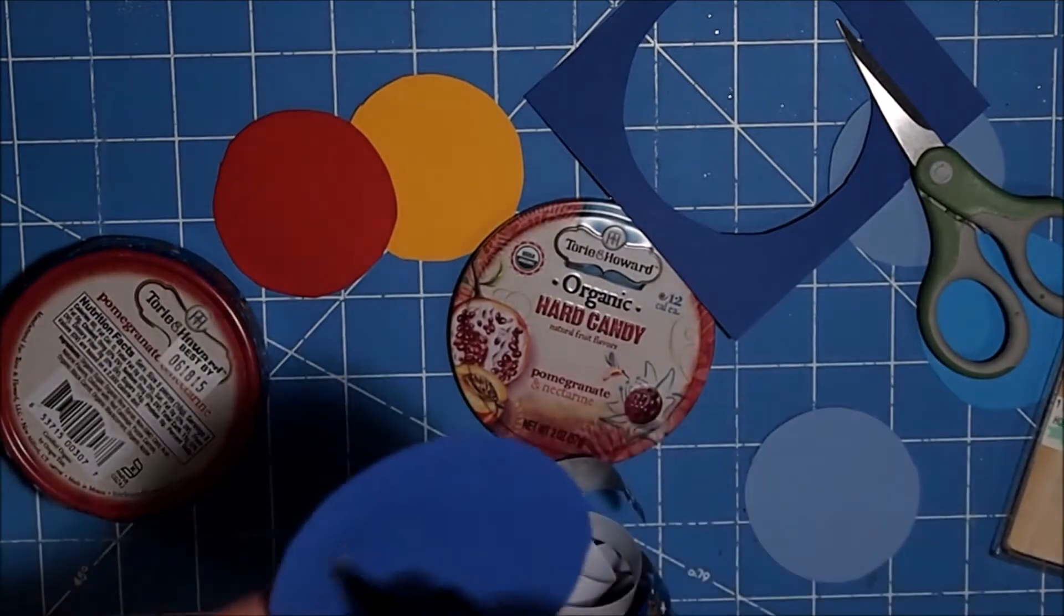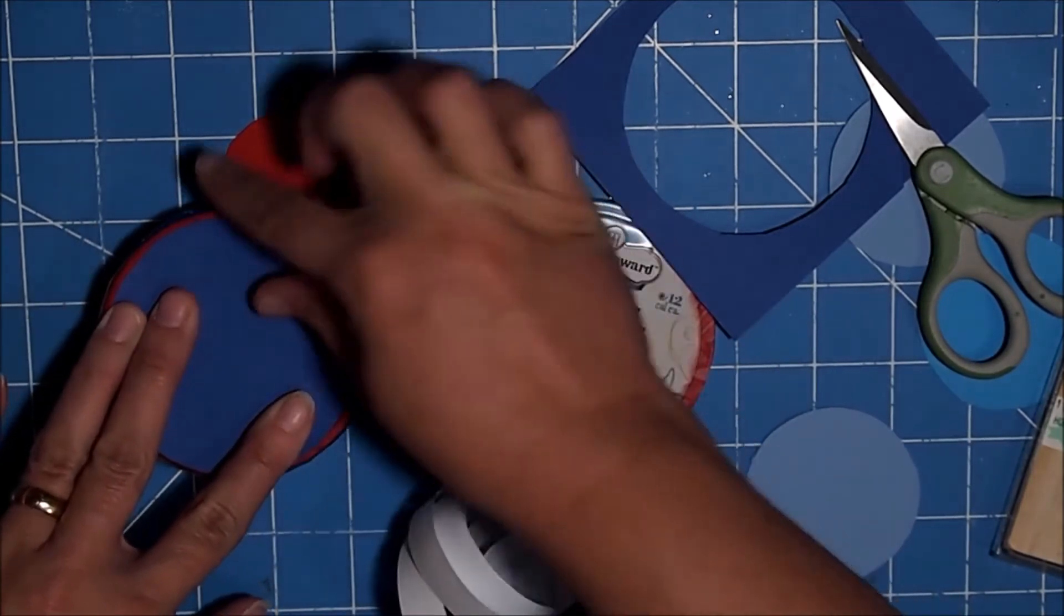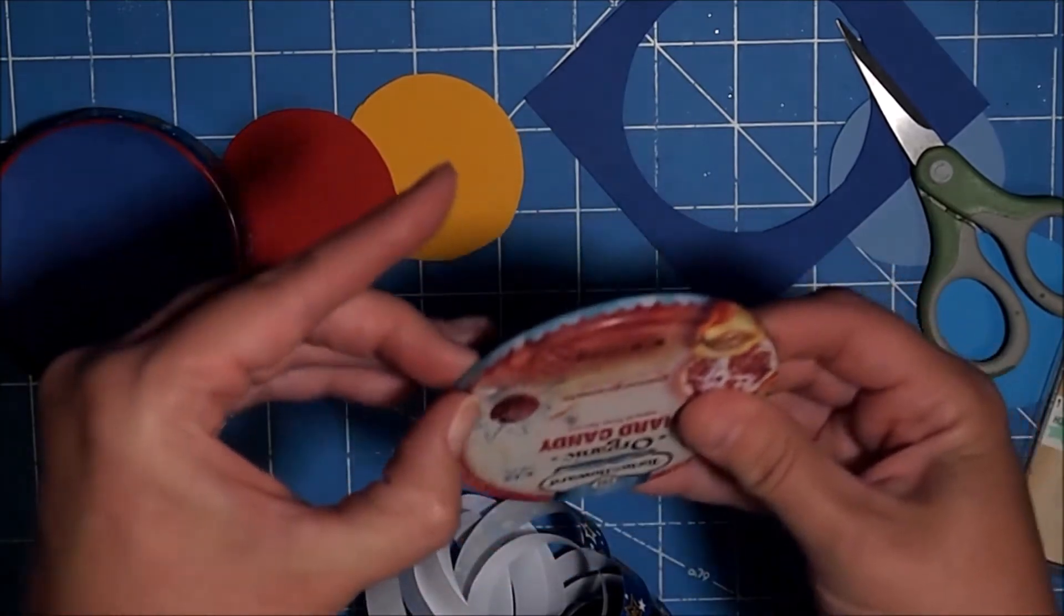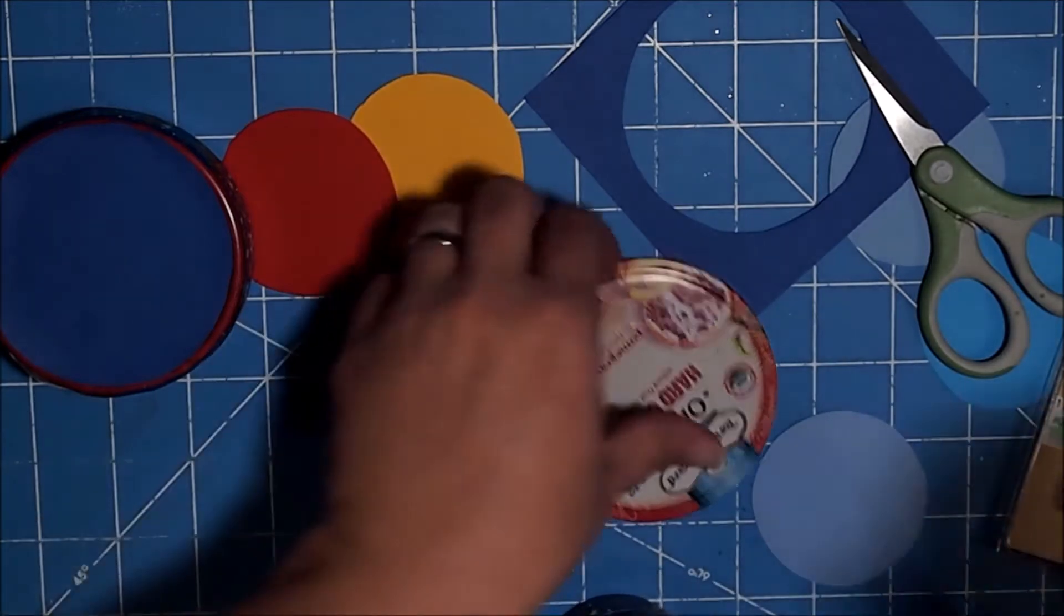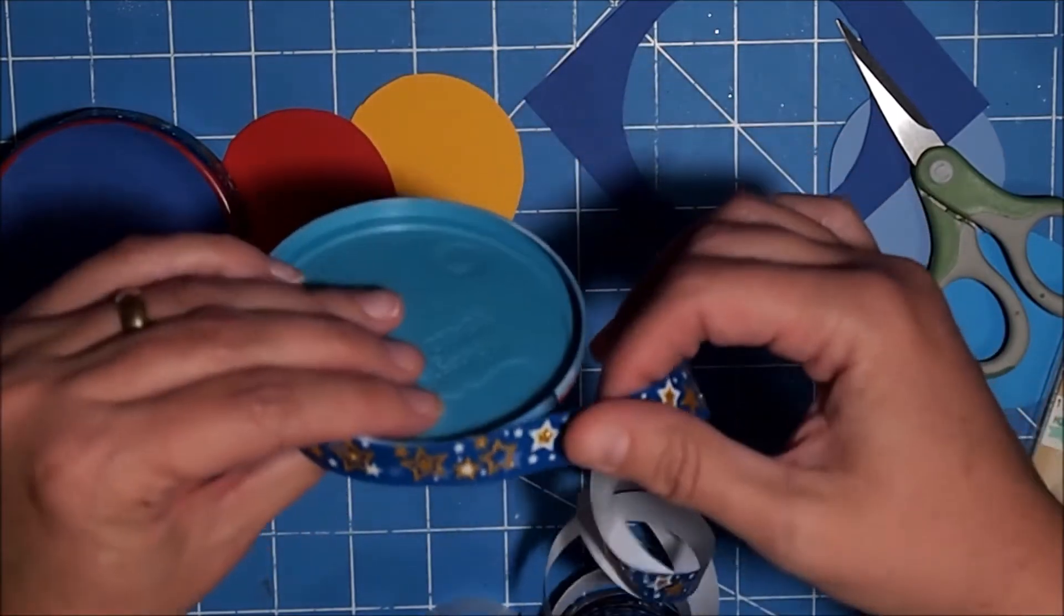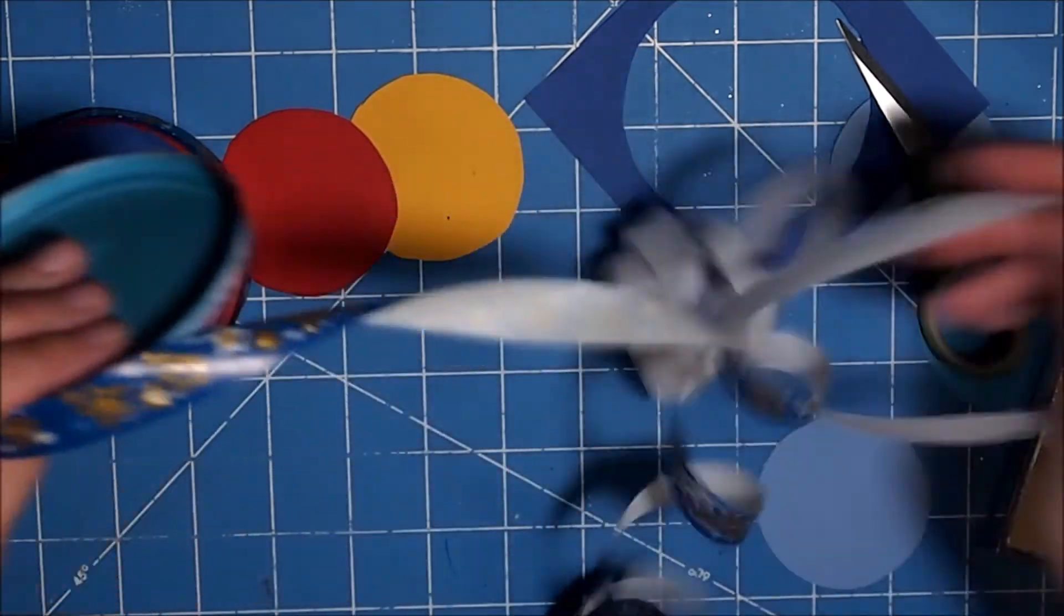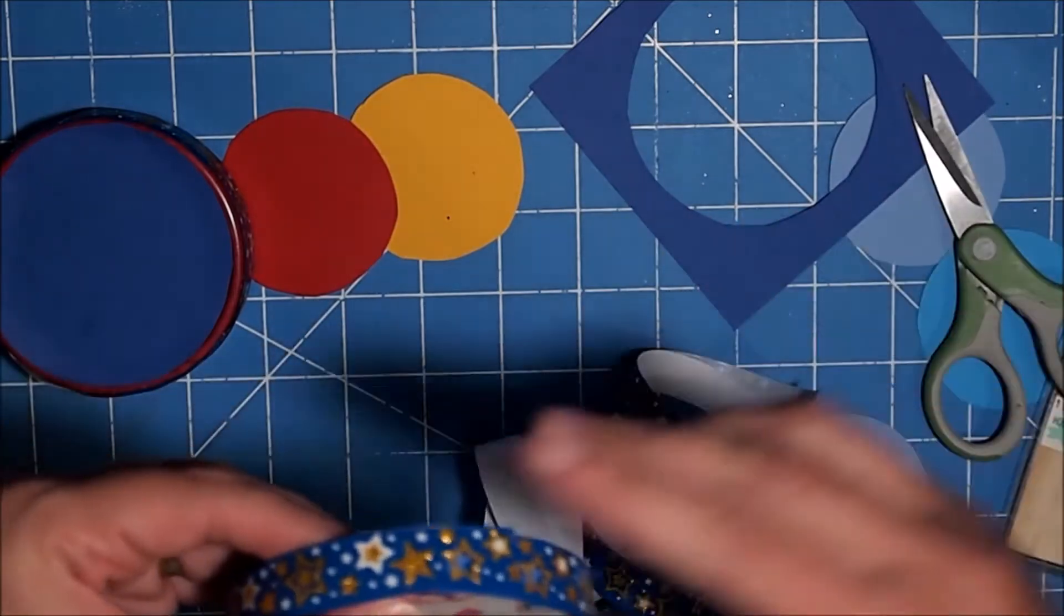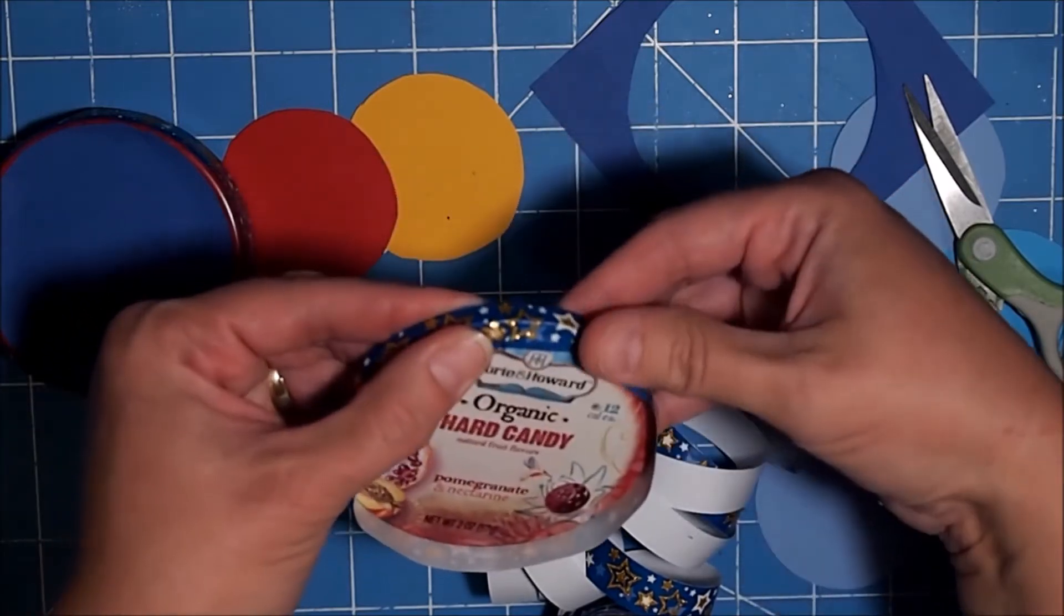I'm just going to glue that down, and that should stay really well. I'm going to decorate just this top part right here, just the lip, because our circle is going to cover up the rest of it. I'm going to use the same washi tape that I used on the bottom part, and I'm just going to go around my lid. I'm just going to fold it over so that when I put my blue circle on it will cover up the tape.